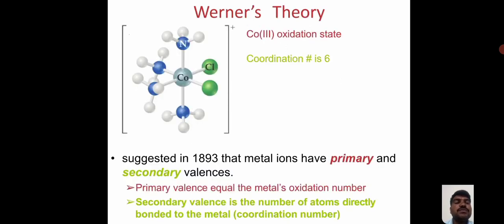Next one is Werner theory. The Werner theory suggests in 1893 that metal ions have primary and secondary valence. Primary valence equals the metal's oxidation number. Secondary valence is the number of atoms directly bonded to the metal atom. It's a coordination number. Werner's theory is explained by cobalt complexes: cobalt 3+ oxidation state, coordination number is 6.